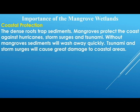Similarly, the impact of tsunamis is reduced by the presence of mangroves along the coast. Without mangroves, sediments will wash away quickly from the coast, so they help to preserve the coastline. Storm surges and tsunamis would cause great damage along the coastal areas without this natural buffer.